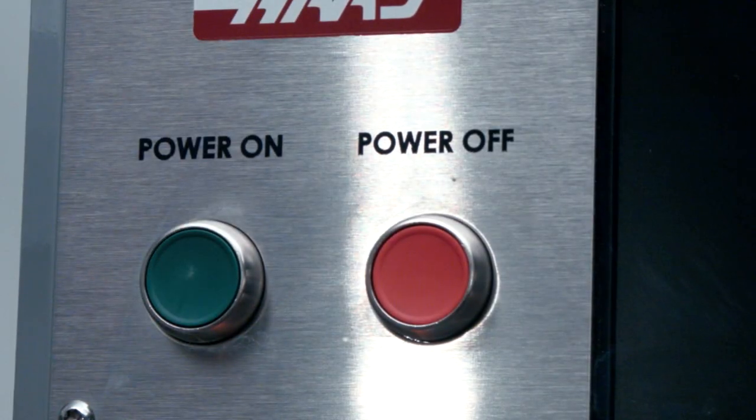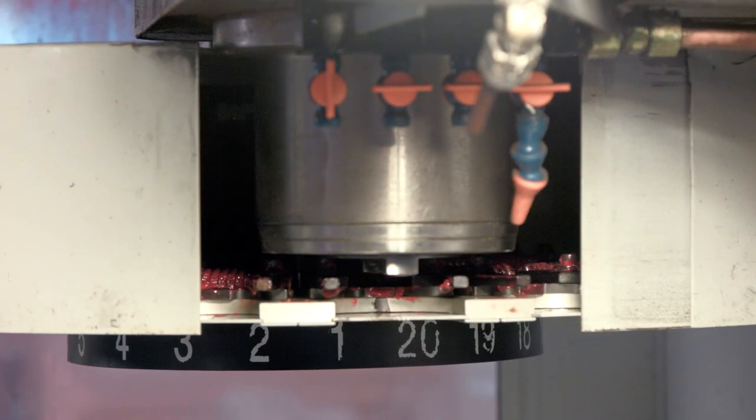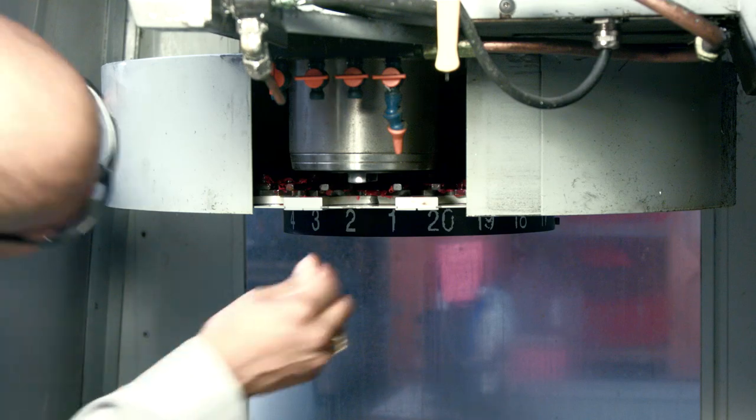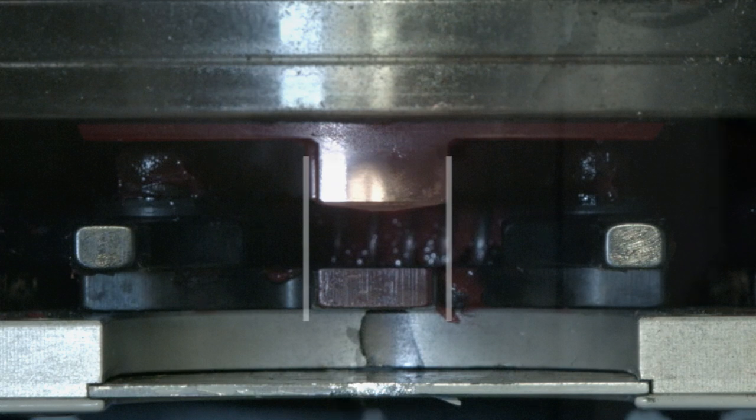Power up the machine and home it out. Command a tool change and hit e-stop when the carousel is close to the spindle. Verify the alignment between the extractor key and the spindle drive dog. Load the tools back in the carousel as they were assigned.